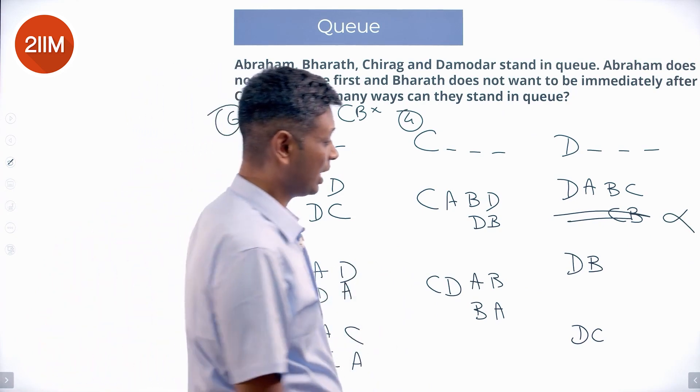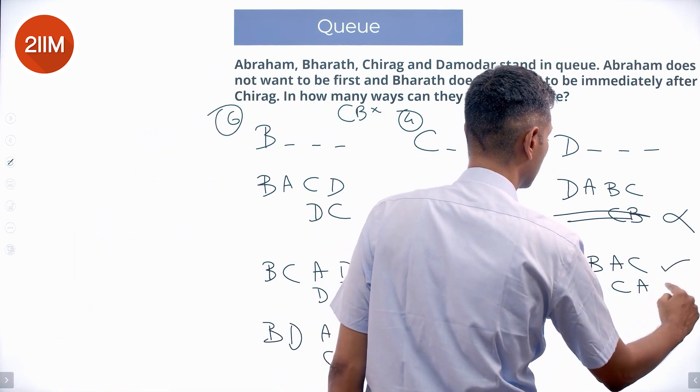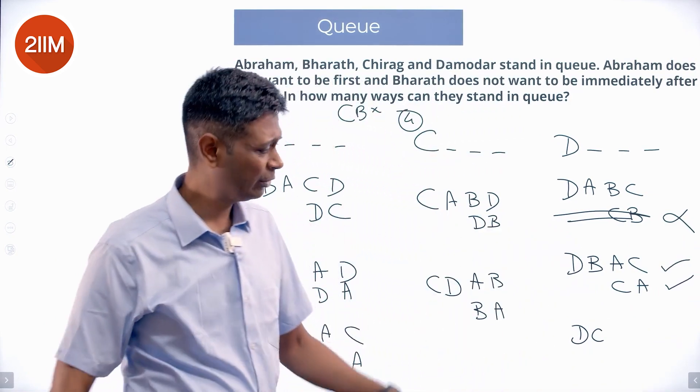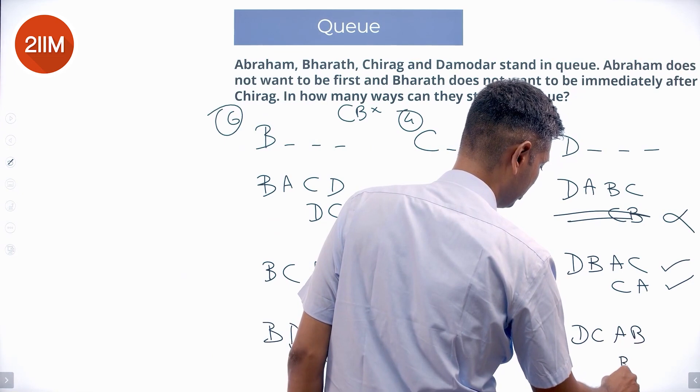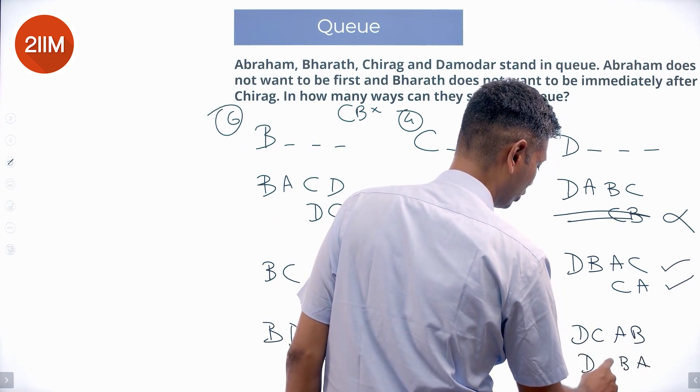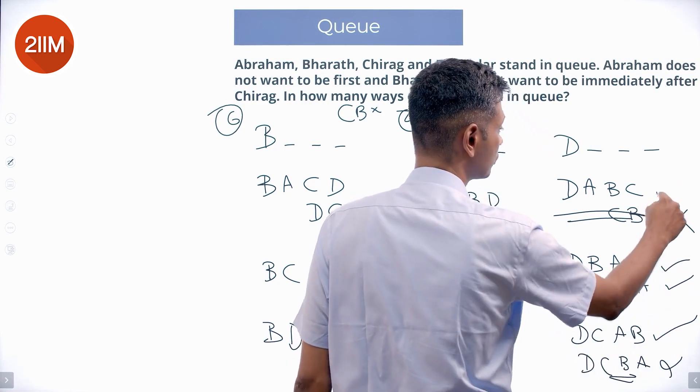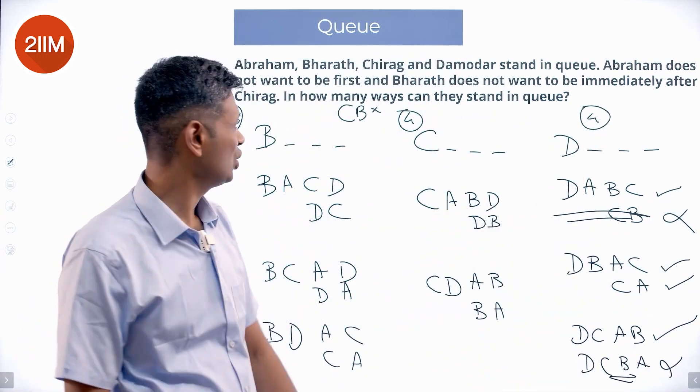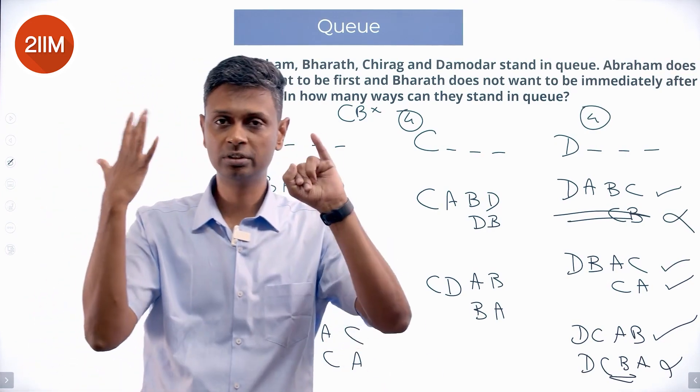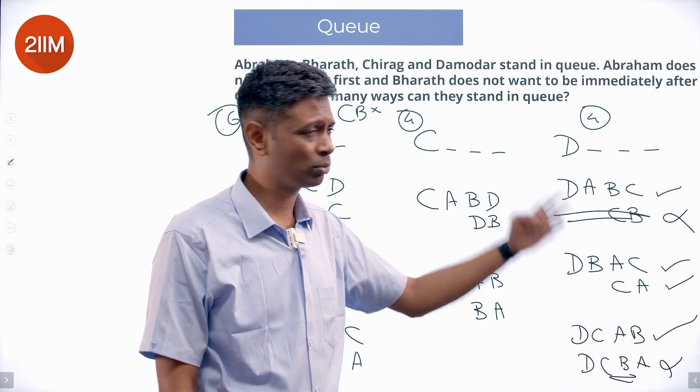Starting with D B, I could have D B A C, D B C A, both are fine. Starting with D C, I could have D C A B, D C B A. I cannot have D C B A because there is C B in between. This is fine. Once again we have four. Starting with B there are six possibilities, starting with C there are four possibilities, starting with D there are four possibilities.